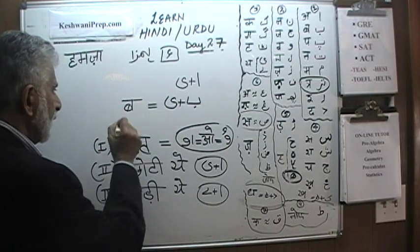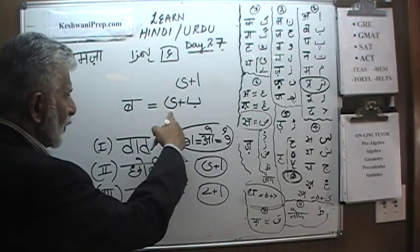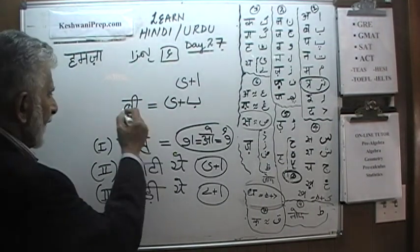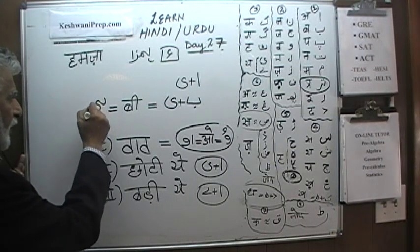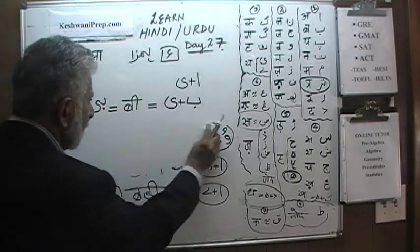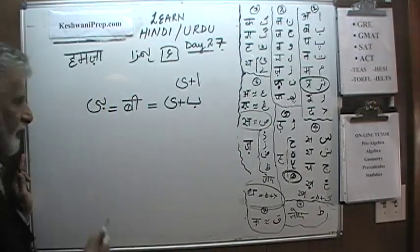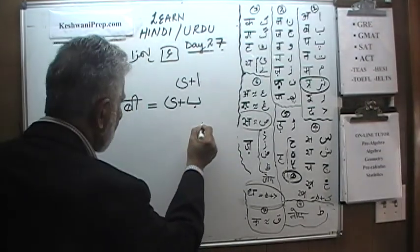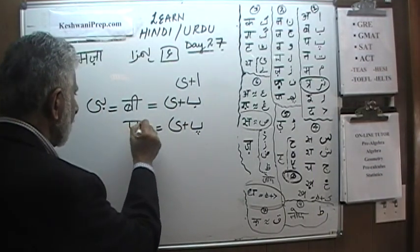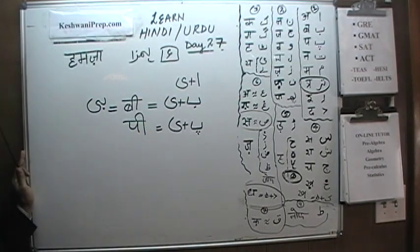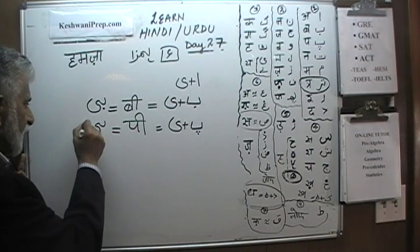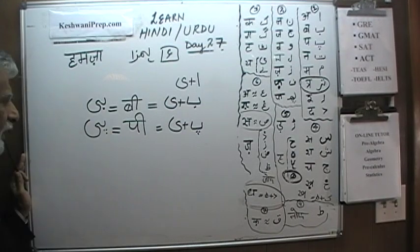Here's our B, and when it combines with Chhotiyeh it becomes a B with Badiyeh ki Matra — we take our B and continue with Chhotiyeh. Similarly, if you take the letter P and add Chhotiyeh, P becomes P with Badiyeh ki Matra — we take our P and continue the Chhotiyeh.